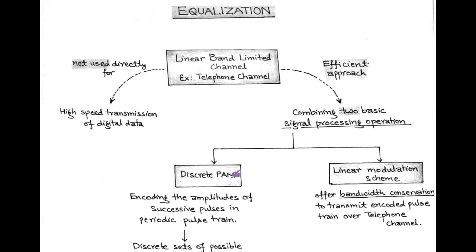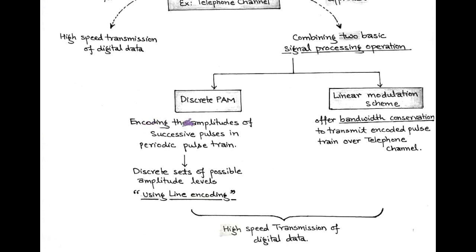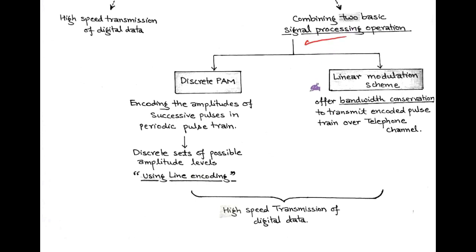The more efficient and appropriate approach is combining the effect of two basic signal processing operations. First is discrete PAM and second operation is linear modulation scheme. In discrete PAM operation, the amplitudes of successive pulses in periodic pulse train are encoded into discrete sets of possible amplitude levels according to the M-ary line encoding technique. After encoding, a linear modulation scheme is introduced that is based on bandwidth conservation scheme and transmits the discrete PAM signal over the telephone channel. This combining effect introduces high speed digital data transmission, that is a type of baseband transmission.